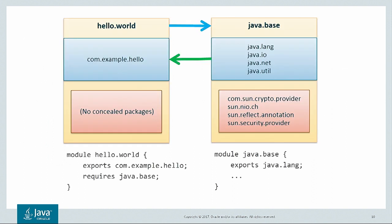When you write your own module, you specify the modules it depends on. This is the second feature of modules in JDK 9: reliable dependencies. A module is a set of packages that reuse the packages exported by other modules. Here we have a hello world module that exports a package of its own and depends on java.base with the requires keyword. This means that code in the hello world module can import any of the packages exported by java.base, but there is no way to import any of the packages concealed by java.base.